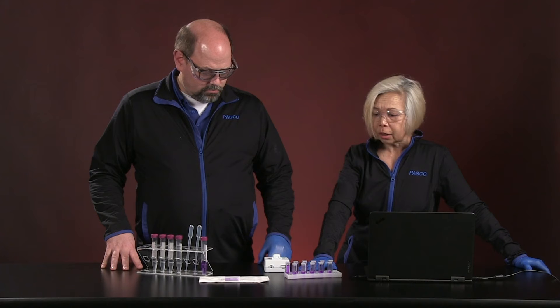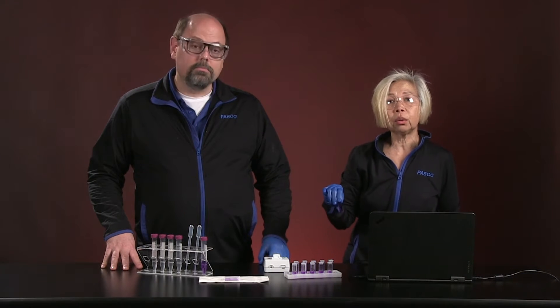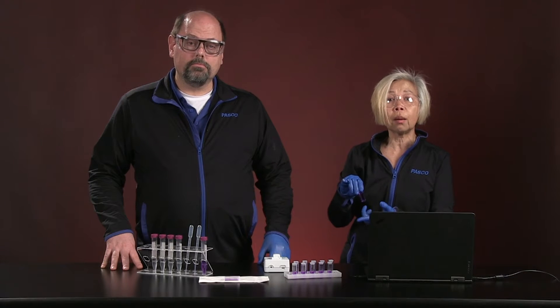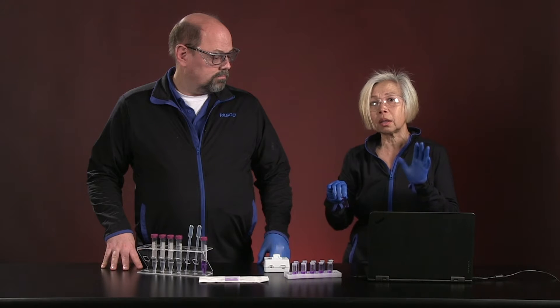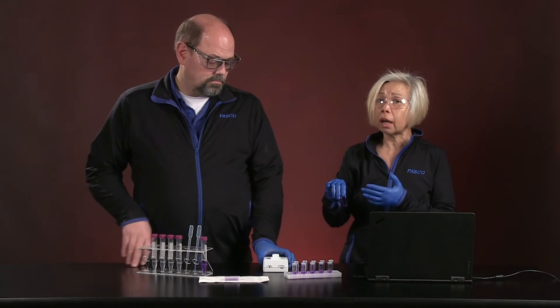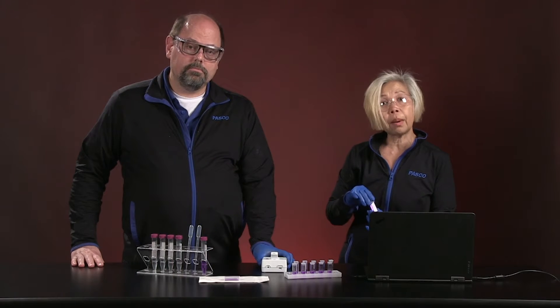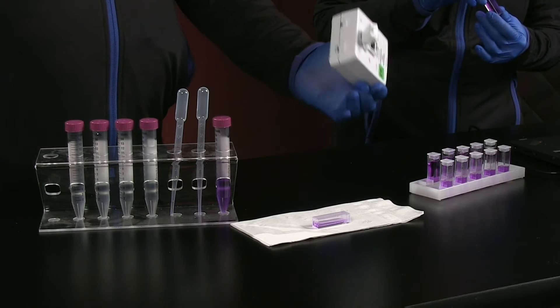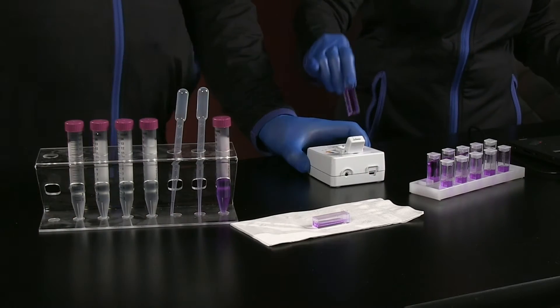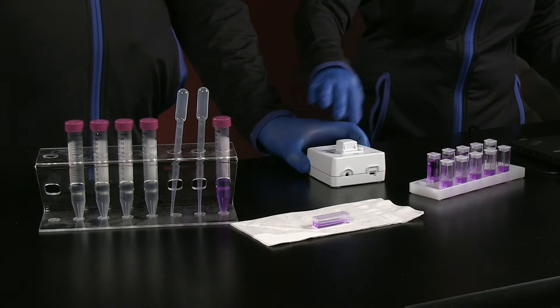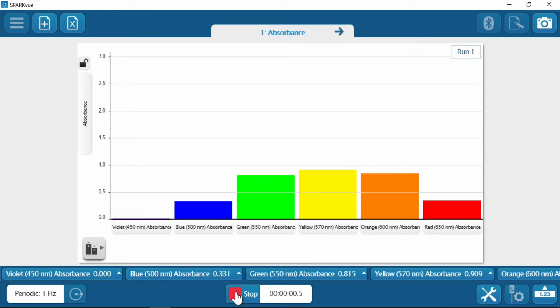Cool. So, let's get started today. Crystal violet. The first thing that we have to do whenever we do any kind of spectrometer or colorimeter studies is to figure out what the appropriate wavelength is that the dye will absorb in. Because after all, you don't want to be reading at the wrong wavelength. So, we are using a PASCO colorimeter, a wireless colorimeter. Very easy to use.